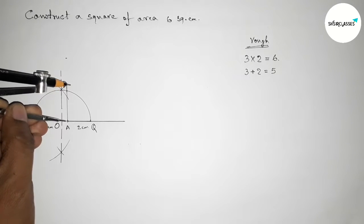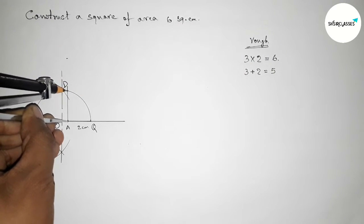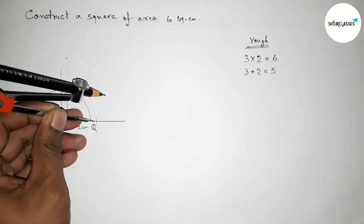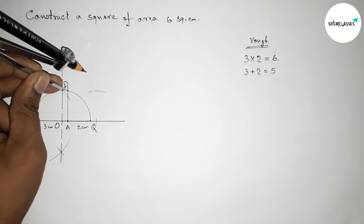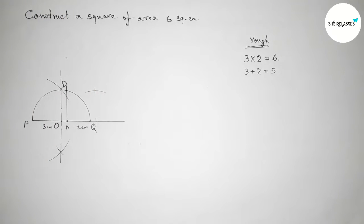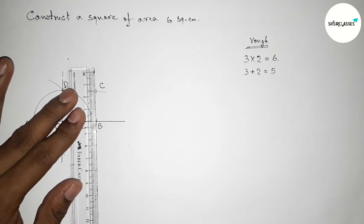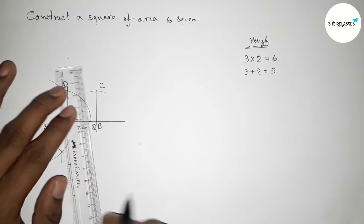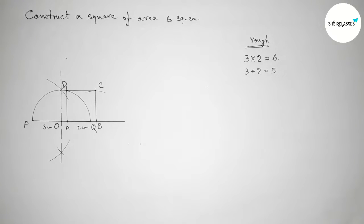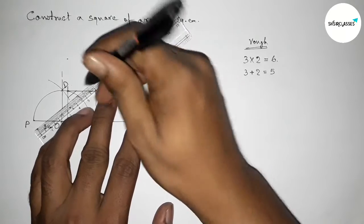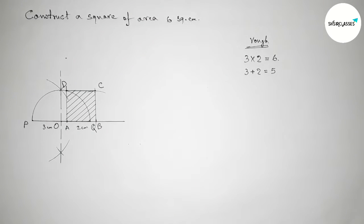Taking the length AD with the compass precisely. Putting the compass at A with the same length, cutting to mark point B. Putting the compass at D with the same length, cutting to mark point C. Joining side BC, then joining side CD to get the square. Drawing lines to mark the area — this is our required square ABCD.